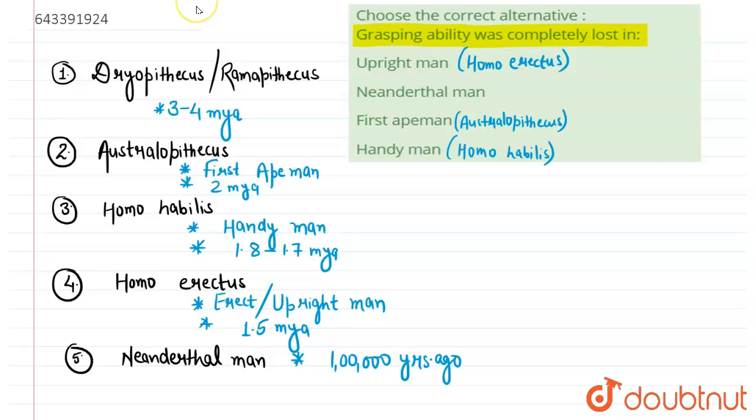And after these Neanderthal men, there are Homo sapiens, which we call the modern men, and they are here from approximately 75,000 to 10,000 years.